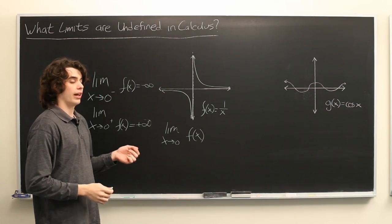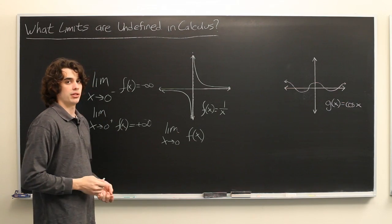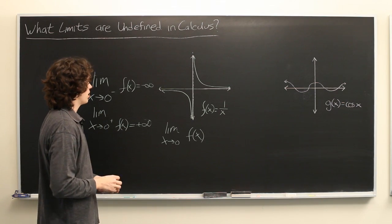And anytime the left and right-hand limits don't agree, then the two-sided limit does not exist. Or you could say it is undefined.